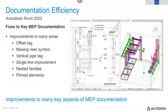There have also been fixes to key MEP documentation. Improvements include offsetting tags and missing riser symbols — particularly around vertical pipes, where there were issues tagging vertical elements and seeing certain properties from vertical stacks. The behavior of that has been improved. Single line improvement for graphical display has also been updated, giving you better documentation outcomes with more flexibility around single line display and symbols.